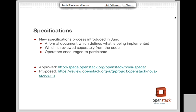One of the things we introduced in the Juno cycle, which was the previous release, was a specification process. This started off as something that Nova and a small number of other projects did, but it's now kind of OpenStack-wide, though each project has implemented it separately. A specification is a formal design document which defines what is being implemented. It's reviewed separately from the code, and it's reviewed before the code. The idea in Juno was if you wanted to do anything that wasn't a bug fix, you would propose a specification. We'd review it and say, we love the feature, but you need to think about tweaking it so it works well with this hypervisor or whatever. That would get approved and then the code would be worked on.